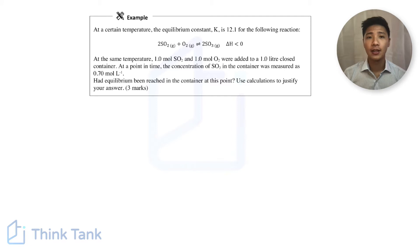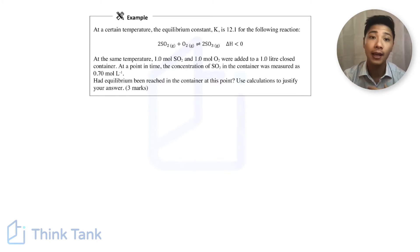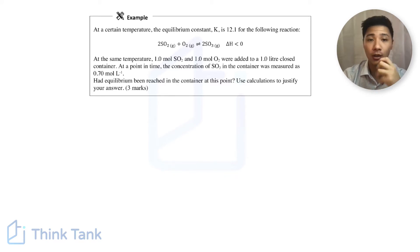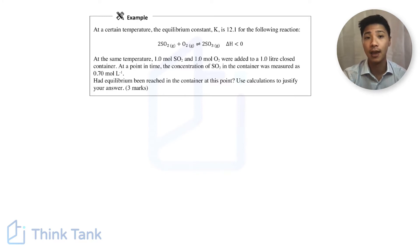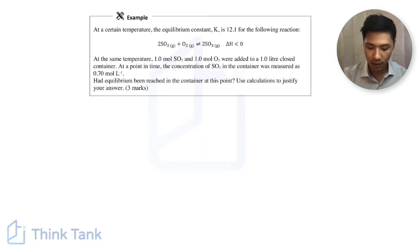When we talk about equilibrium calculations, there are essentially two or three main calculations you will learn. The first one is calculating the equilibrium constant — finding K. Then you might have a question where they give you K and you back-calculate to find the equilibrium concentration. And there's a third type where you determine whether a system is at equilibrium or not — that's where we use the Q value and compare it to K. Now this question combines one or two of these different types of calculations, so let's jump into it.